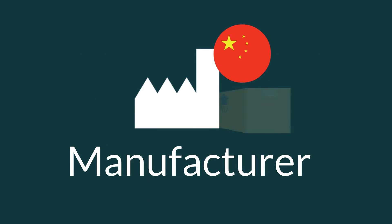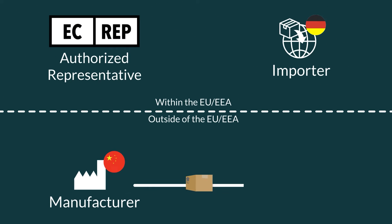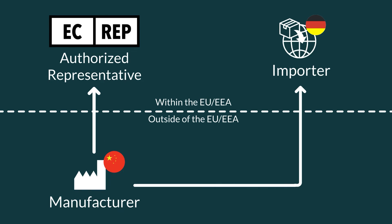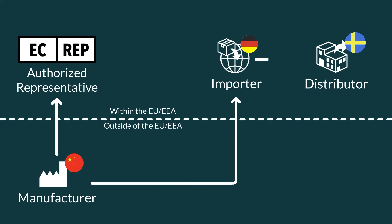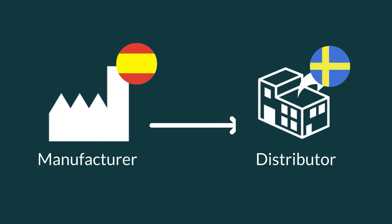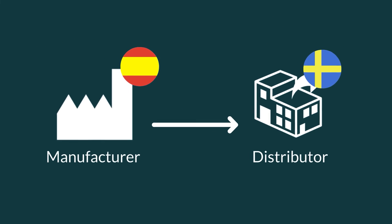Here you see the flow of a product coming from outside the EU. Whether or not all four economic operators are represented in a supply chain depends on whether the products are being sourced inside or outside the EU. Selling products from within the EU is a little less complicated.